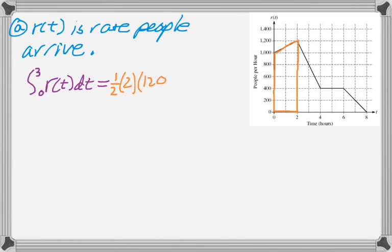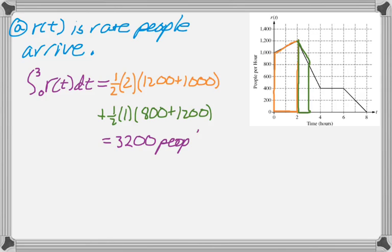So it's 1 half, the height is 2, and then the sum of the bases, and then plus another trapezoid, 1 half, and then the height is 1, and the sum of the bases. And we add those together, and we get 3,200 people. So that's how many people arrive between 0 and 3 hours of the park opening.